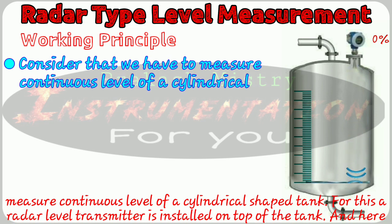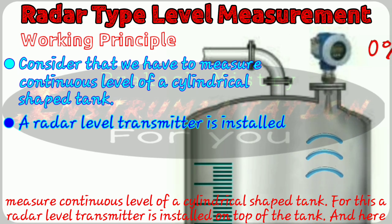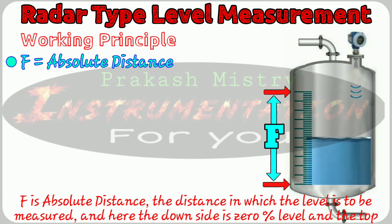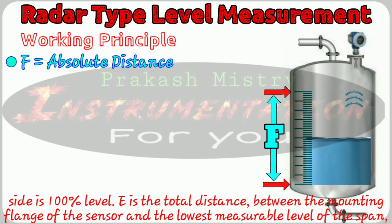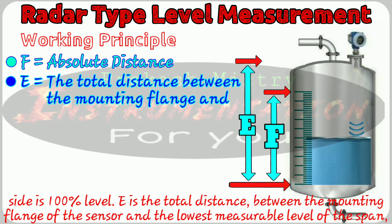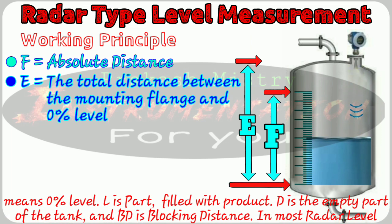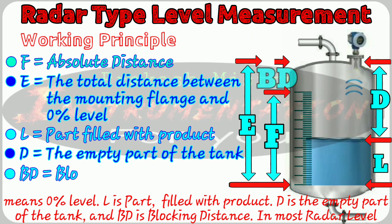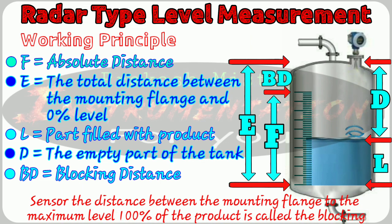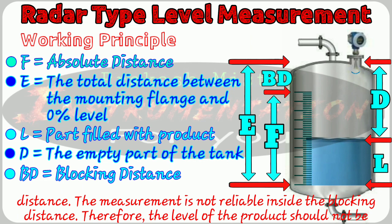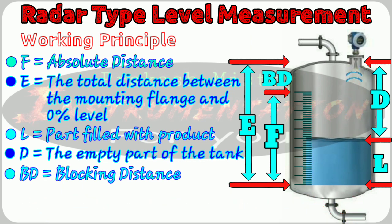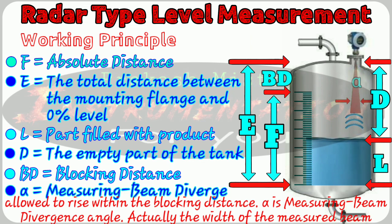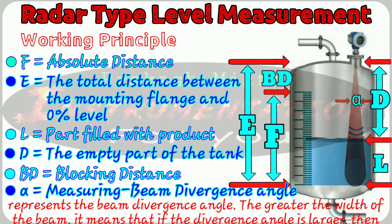Consider that we have to measure the continuous level of a cylindrical shaped tank, with a radar level transmitter installed on top. Here, F is the absolute distance — the distance in which the level is to be measured. The downside is the 0% level and the top side is the 100% level. E is the total distance between the mounting flange of the sensor and the lowest measurable level of the span, meaning 0% level. L is the part filled with the product, D is the empty part of the tank, and BD is the blocking distance. In most radar level sensors, the distance from the mounting flange to the maximum 100% level is called the blocking distance, and measurement is not reliable inside it. Therefore, the level of the product should not be allowed to rise within the blocking distance.